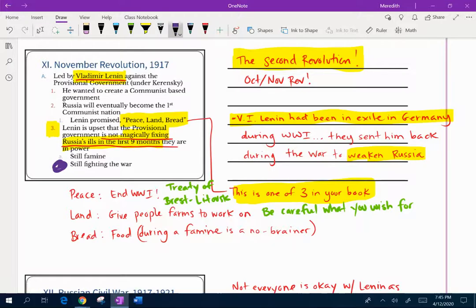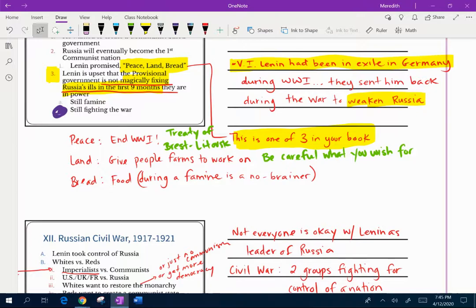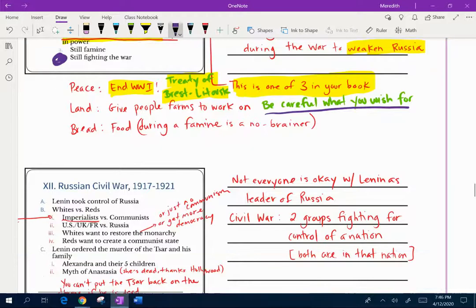Lenin had a lot of time to plan this because he'd been kicked out of Russia earlier because his brother had tried to kill the czar. He was put to death. And so Lenin was involved in revolutionary activity and he had been exiled. At this time during World War I, he's in Germany. Germany is like, hey, let's send him back. And maybe he's going to create problems in Russia. Maybe Russia will be forced to pull out of the war. So Lenin is convincing the people that the provisional government is terrible. It was a bad idea because they're not magically fixing all of Russia's problems in the first nine months that they're in power. The biggest downfall for Kerensky is that the provisional government stayed fighting in the war.